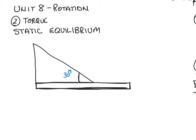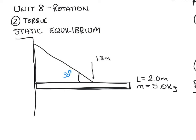Let's say we have a beam held up against a building with a rope. Our beam has a length of two meters and a mass of five kilograms. The rope is attached to the beam at 1.3 meters from our axis of rotation, and the beam is held up against the building at zero meters. We'll build a free body diagram for all forces acting on the system. The mass of the beam exerts a downward force of gravity midway down its length — treated as a five kilogram object placed at one meter.